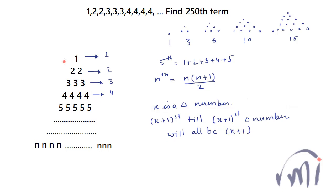For example, if I mark these terms: the 1st term, 2nd term, 3rd term — 3 is the second triangular number and 1 is the first triangular number, so all the terms from the 2nd to 3rd are 2. Similarly, from the 4th term to the 6th term, and 6 is our third triangular number, all the terms are equal to 3.